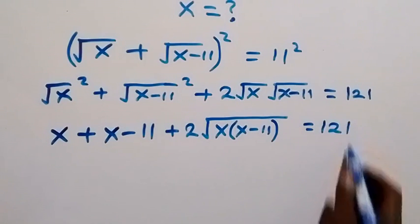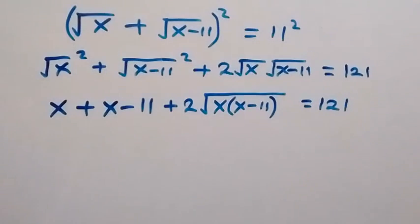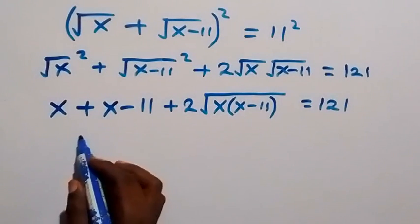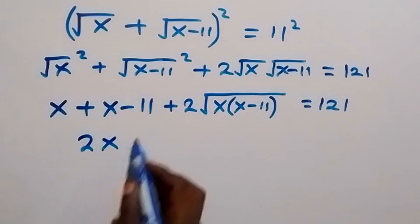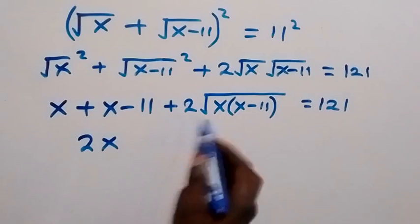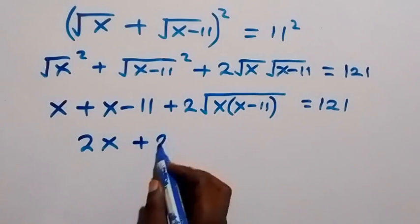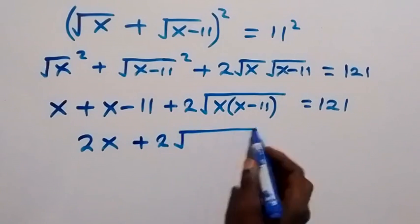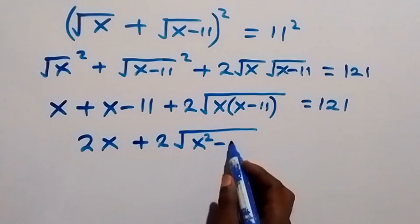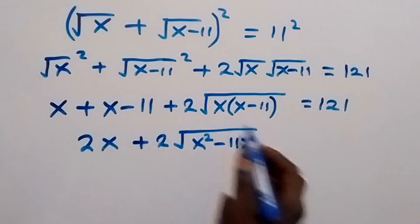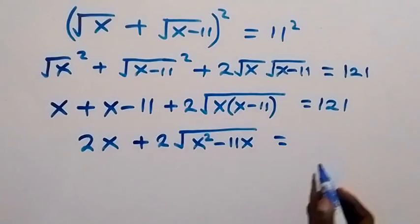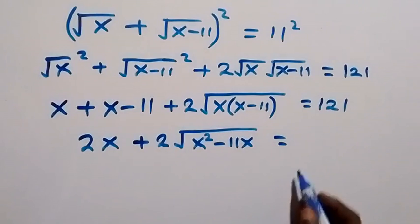This equals 121. We have x plus x, that's 2x, and then minus 11 moves to the other side to become plus 11, leaving us with 2x plus 2√(x² − 11x), when we expand the bracket, equals 121 plus 11.